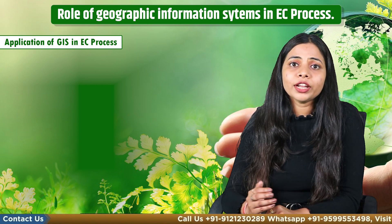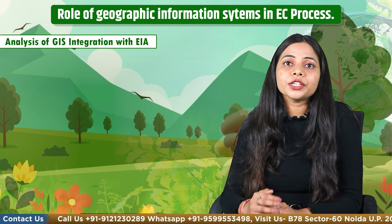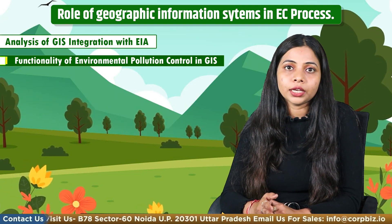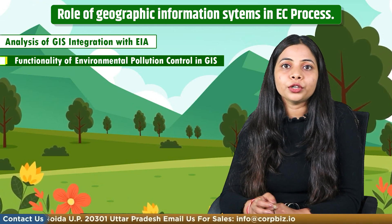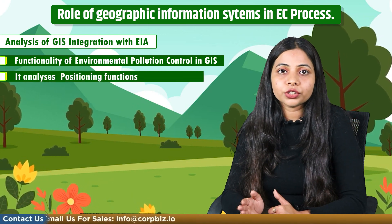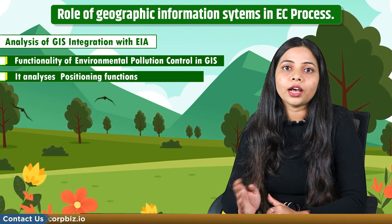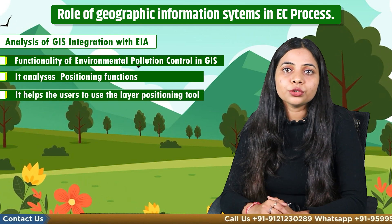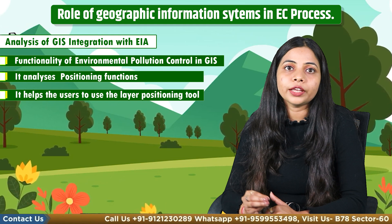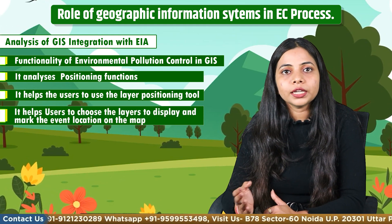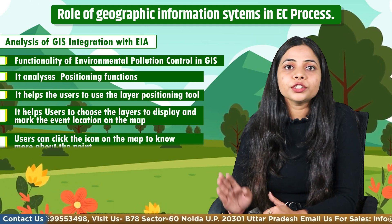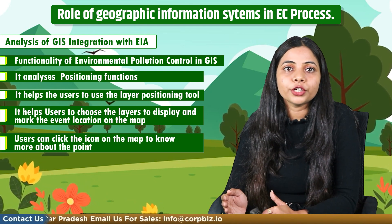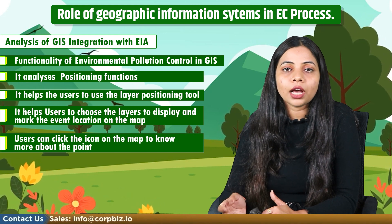The overall functionality of environmental pollution control in GIS includes positioning, layer management, marine and air pollution modeling, and data management. The positioning function contains coordinate positioning, road and address positioning, landmark positioning, layer positioning and cadastral positioning. Users can use the layer positioning tool to zoom into the location they would like to check, choose layers to display, and mark the event location on the map. Users can also click on an icon on the map to view photos, location-related documents, attributes, experiment data and business information through attribute query.